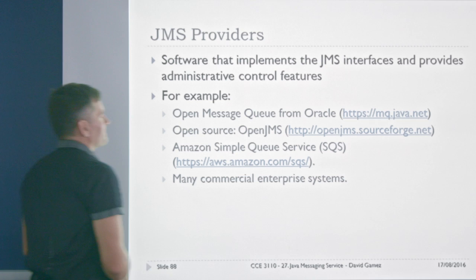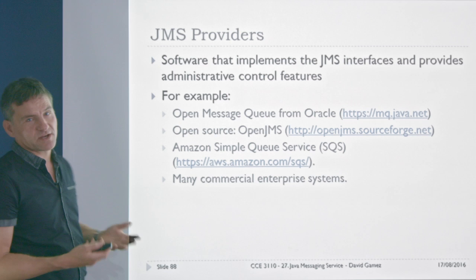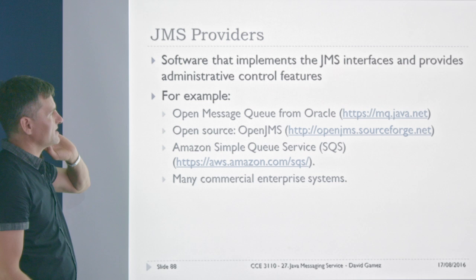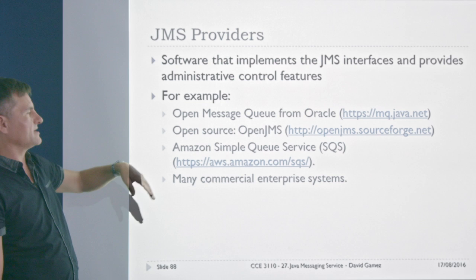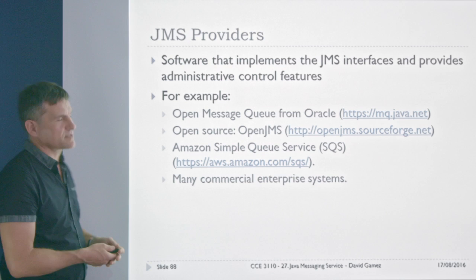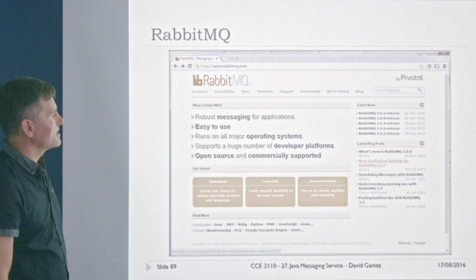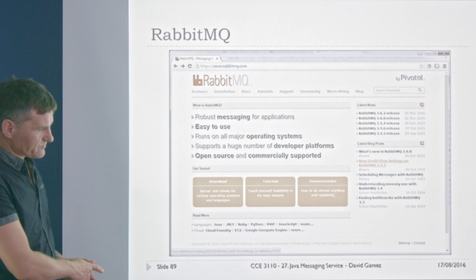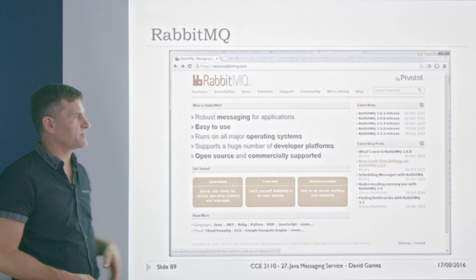The software that implements JMS interfaces and provides administrative control features — the glue that hangs it all together — is called the JMS provider. There are lots of different ones: Oracle's Open Message Queue, OpenJMS, the Amazon Simple Queue Service for running on the cloud, and many commercial enterprise systems. There's also RabbitMQ, which looks robust, easy to use, runs on all operating systems, supports lots of developer platforms, and is open source with commercial support.